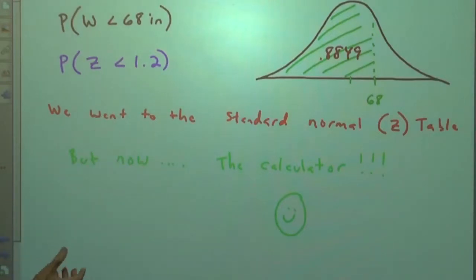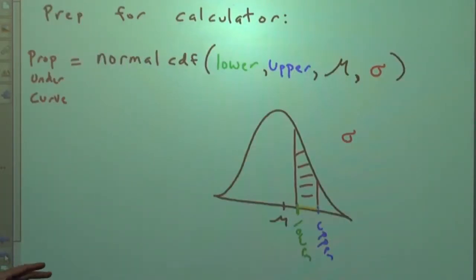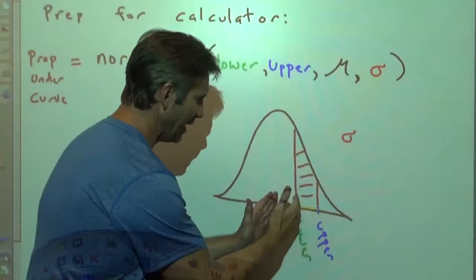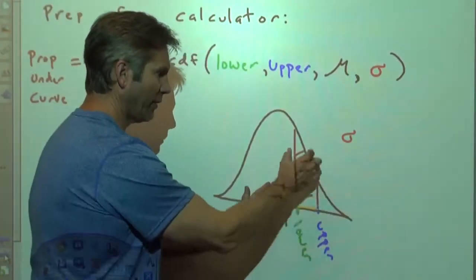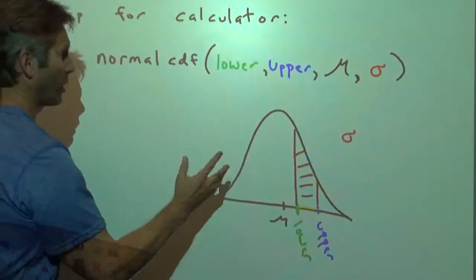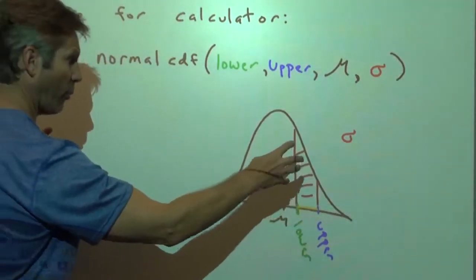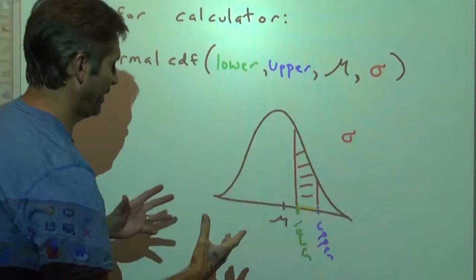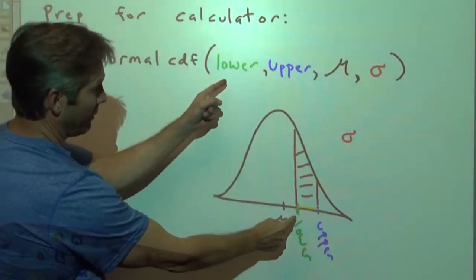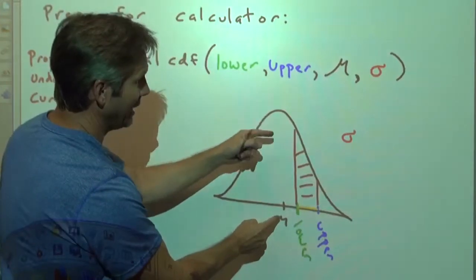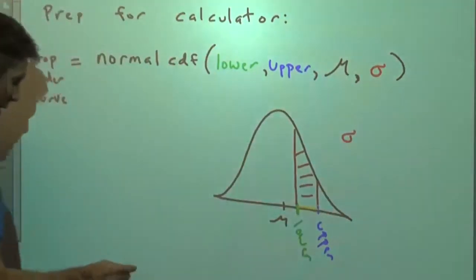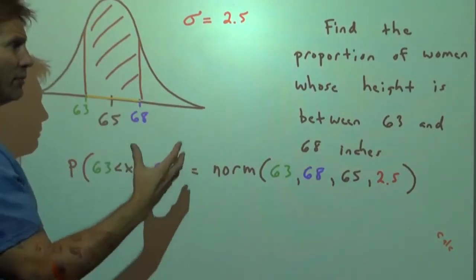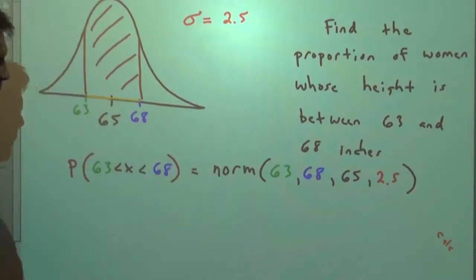Now we want to use the calculator to do the same thing because it's quicker. We're going to find any interval along the x-axis and the area under the curve over that interval. The area under the curve — the proportion of the population — I'll write in brown. The lower end of the interval is green, the upper end is blue, the mean is black, and the standard deviation is red. So we're going to find the proportion of women whose height is between 63 and 68 inches.